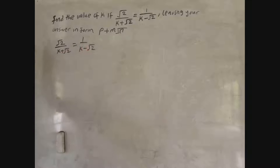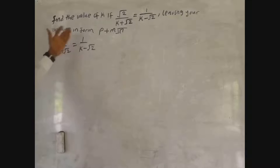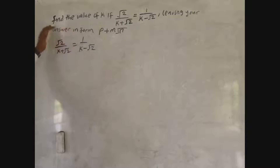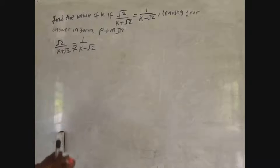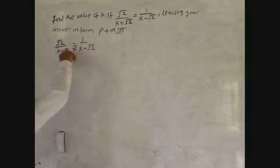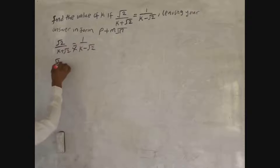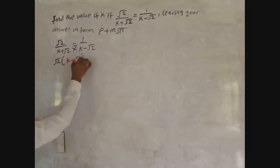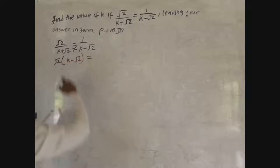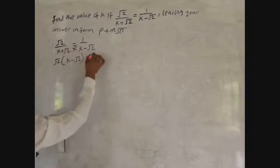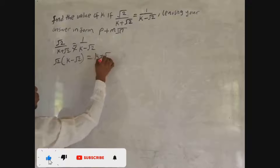So we have it like this. We have the first part here and the second part here, and what divides them is the equals sign. So if you see something like this, the first thing to do is cross-multiply. This side multiplies across: √2 times (k − √2) equals 1 times (k + √2).